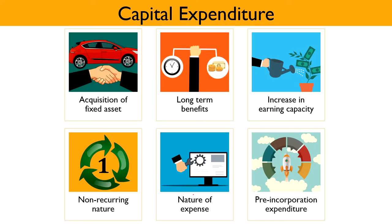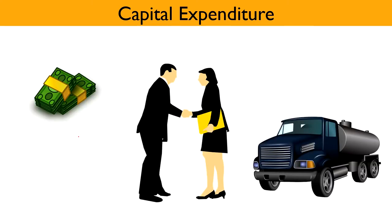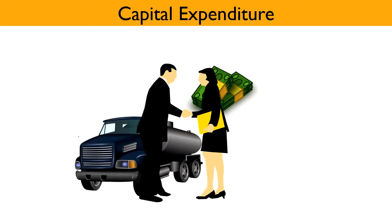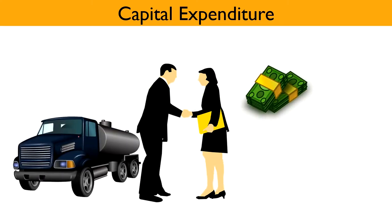We come up with 6 basic criterions to identify whether an expenditure is a capital expenditure or not. The first is Acquisition of Fixed Asset — the expenditure incurred should be for acquisition of a fixed asset or for extending an asset, i.e., it should be incurred to increase the value of the asset. The asset acquired through such expenditure is not for sale. For example, suppose a company that deals in furniture buys a truck for Rs. 20 lakhs — this truck is a fixed asset not purchased for resale, so the amount spent is a capital expenditure.